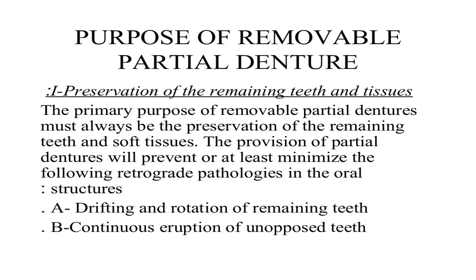Purpose of removable partial denture. I. Preservation of the remaining teeth and tissues: the primary purpose of removable partial dentures must always be the preservation of the remaining teeth and soft tissues. The provision of partial dentures will prevent or minimize the following retrograde pathologies: drifting and rotation of remaining teeth, and continuous eruption of unopposed teeth.